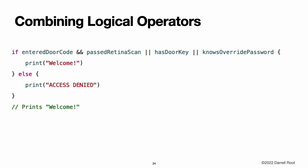Combining logical operators. You can combine multiple logical operators to create longer compound expressions. This example uses multiple logical AND and logical OR operators. However, the logical AND and logical OR operators still operate on only two values, so this is actually three smaller expressions chained together. The example can be read as: if we've entered the correct door code and passed the retina scan, or if we have a valid door key, or if we know the emergency override password, then allow access. Based on the values of entered door code, passed retina scan, and has door key, the first two sub-expressions are false. However, the emergency override password is known, so the overall compound expression still evaluates to true. Note: Swift's logical operators are left-associative, meaning compound expressions with multiple logical operators evaluate the leftmost sub-expression first.